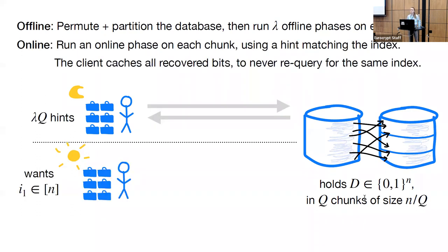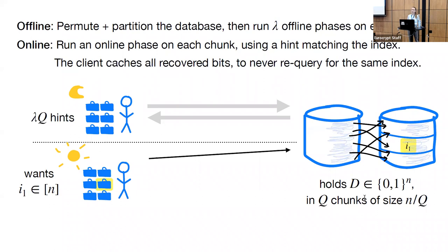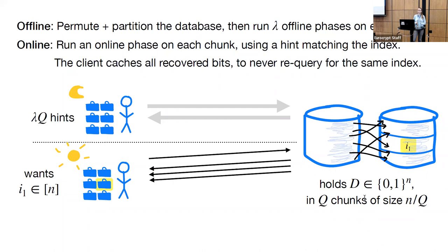Later, our client decides it wants to read database index i1. It figures out which chunk i1 falls into — say the middle chunk — and selects a hint matching that middle chunk. With this hint, the client builds a PIR query exactly as in the underlying PIR scheme. The server takes this query and answers it with respect to each of the Q database chunks, sending back Q answers. The client knows it's trying to read the middle chunk, so from the middle hint and middle answer, it recovers the i1 database bit. The client also caches the i1 database bit, so if it wants to read this index again, it can use its locally cached value and make a dummy query. The client then discards the hint it just used, since the underlying PIR scheme is single query.